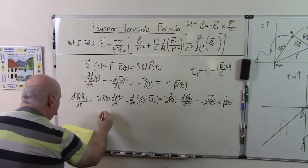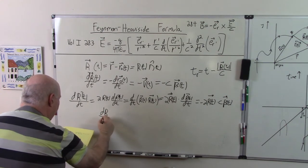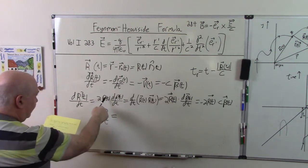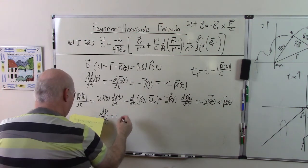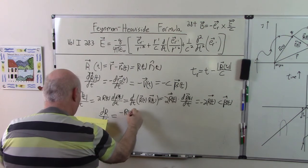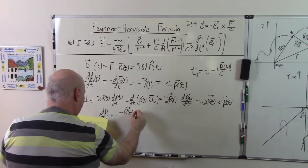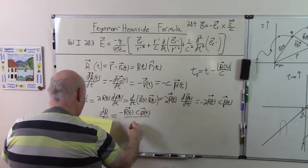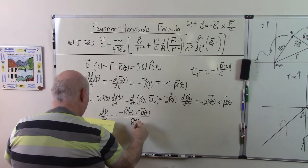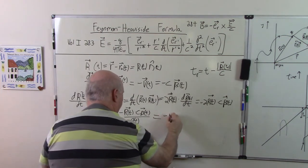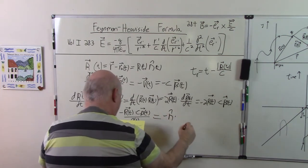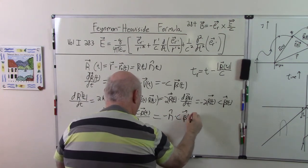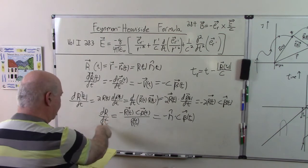And I did this because I want to use this formula every now and then, dr dt, if I divide by 2 r here, I'm going to get minus r of t dot c beta of t over r of t, which is equal to minus n hat dot c beta of t. So that's just the result I wanted from there.